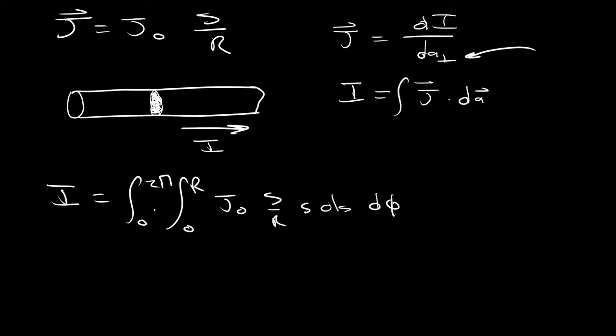All right, now there's no Φ dependence here. So the Φ integral is pretty easy. We're just going to get an extra 2π out here. And we can simplify this so that we end up getting the following. We're going to get 2π times integral 0 to R of J₀ S squared per R dS.